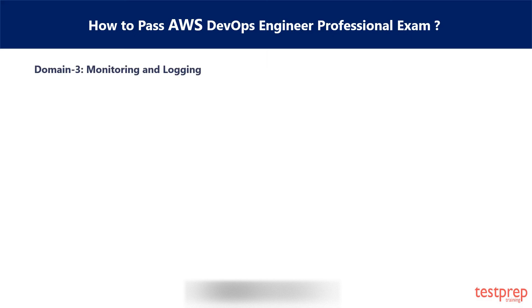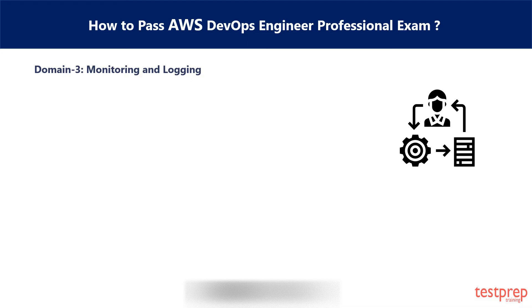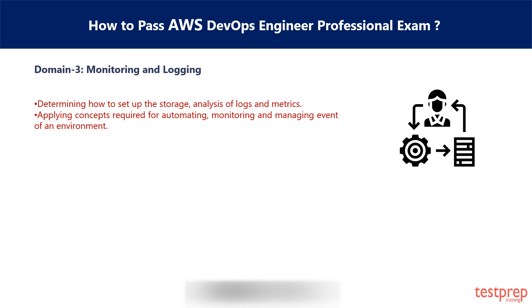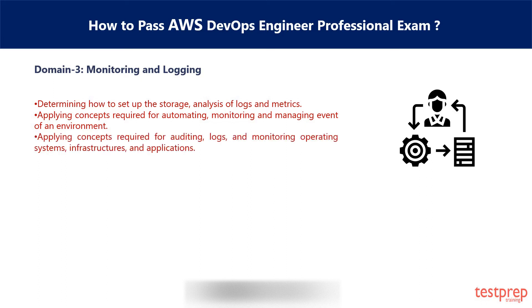Domain 3 is Monitoring and Logging. This domain covers 15% of question weightage in the exam. The sections include: 1. Determining how to set up the storage, analysis of logs and metrics. 2. Applying concepts required for automating, monitoring, and managing events of an environment. 3. Applying concepts required for auditing logs and monitoring operating systems, infrastructures, and applications. 4. Determining and implementing tagging and other metadata strategies.